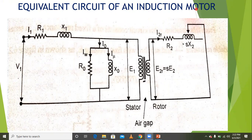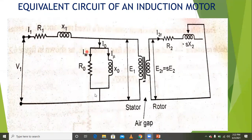The induction motor is called a rotating transformer. The stator winding is the same as the transformer primary winding. The induction motor rotor is the secondary side, which is a short circuit, same as the secondary winding of the transformer.